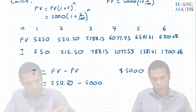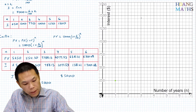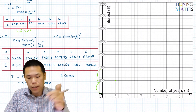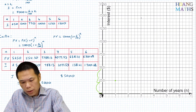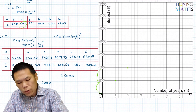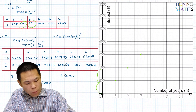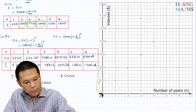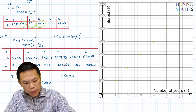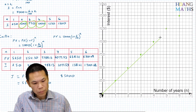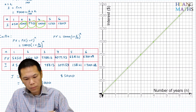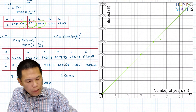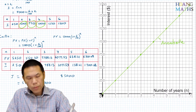Let me draw a box for it. N = 1, simple interest is $250 — the graph goes up by $250 each year. When N = 2, I = $500. When N = 3, I = $750. When N = 4, it's $1,000. It's a straight line — you can see the pattern. N = 0 gives interest of 0, so the line starts from the origin. That is Annabelle's simple interest graph — a straight line.